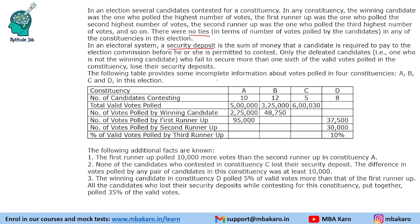The following table provides some incomplete information about votes polled in four constituencies A, B, C, D. These are the number of candidates, the total votes, and the first, second, third, and fourth place finishes. For the fourth-place candidate, they have given the percentage of votes. Most of the data is missing from the table.